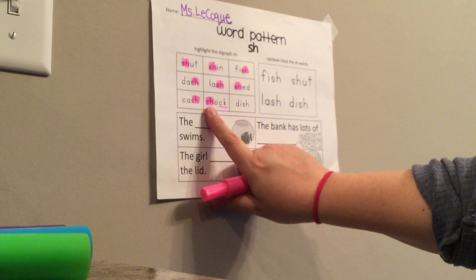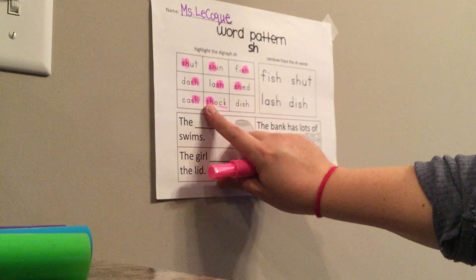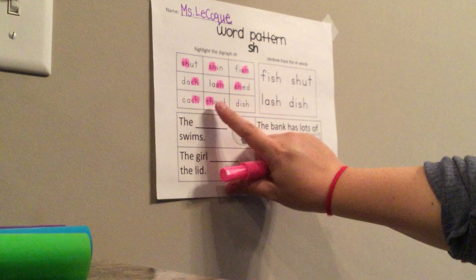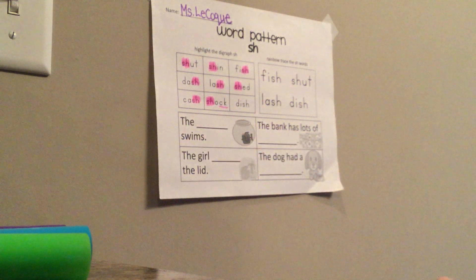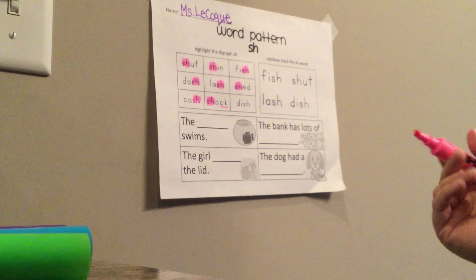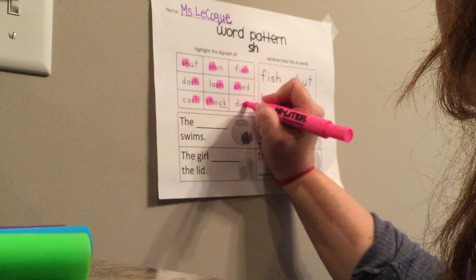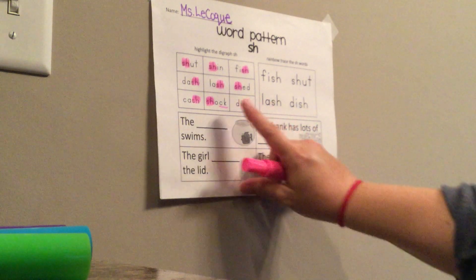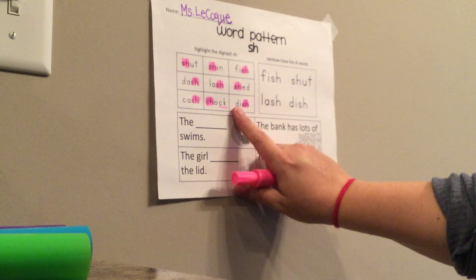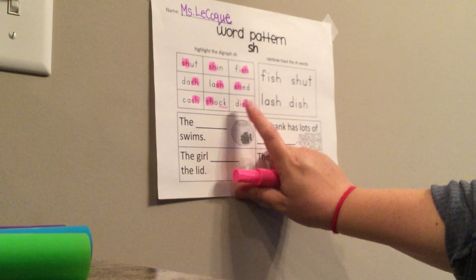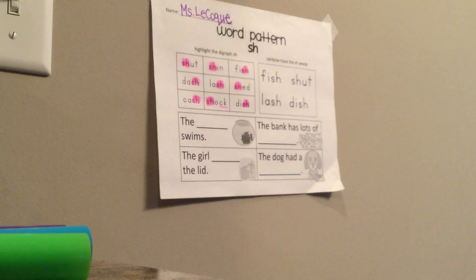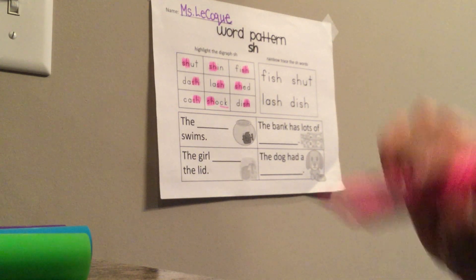Now it's your turn. Get your finger ready, but you're going to say it, not me. What word did you say? Shock. Shock. Last one — highlight the 'sh'. Where is it in the word, at the beginning or the end? Yes, it's at the end. Get your finger ready, you say it, not me. What word did you say? Dish. Nice job.